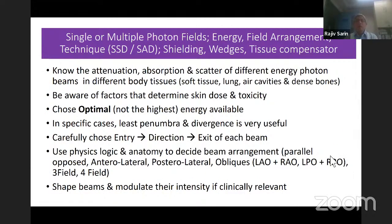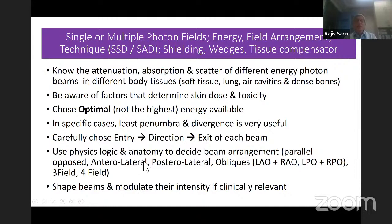In the planning process, be aware of attenuation, absorption, and scatter of different energy photon beams in different body tissues — soft tissues, lung, air cavities, and dense bones. Be aware of factors that determine skin dose and toxicity, and choose the optimal — not the highest — energy. Use the beam with the least penumbra and divergence when relevant. Carefully choose the entry direction and exit of each beam.